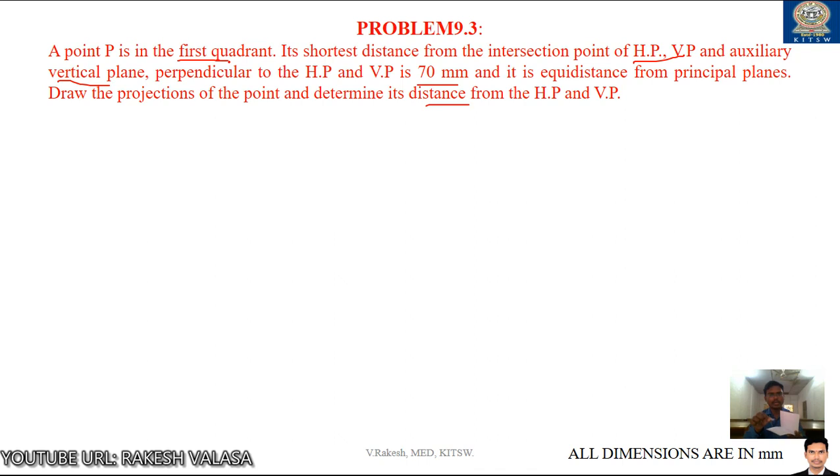The another condition is its shortest distance from intersection point of horizontal plane, vertical plane and auxiliary vertical plane perpendicular to both HP and VP. Let us take one more plane. This plane is perpendicular to both HP and VP. Simply, we can also call this profile plane.